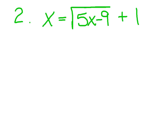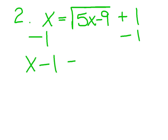Question 2: x equals the square root of 5x minus 9 plus 1. Let's recall those steps. I first want to isolate the radical, so I need to move over the positive 1 by subtracting 1. Now you'll notice, you can't put x and 1 together — it does not become negative x. So I'm simply going to write what I have: x minus 1 equals the square root of 5x minus 9.